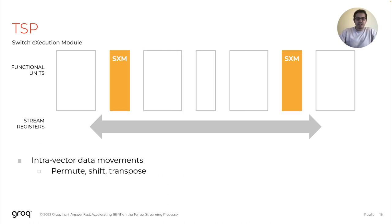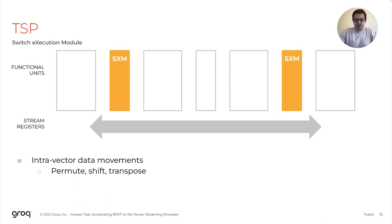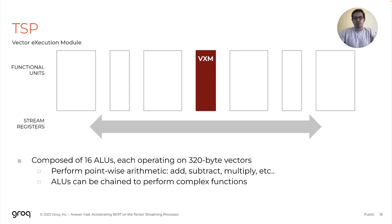These memory slices are divided 44 on the east and 44 on the west, and each slice has 8192 addresses of 320-byte words. The second module is the Switch Execution Module, or SXM, which is responsible for data manipulation — inter-data movements like shifting, permutation, and transpositions happen in the SXM, and we have two of these, one in the east and one in the west. Next is the VXM, the Vector Execution Module, composed of 16 ALUs. Each ALU operates on 320-byte vectors and performs pointwise arithmetic such as add, subtract, exponentiation, and reciprocal square root.